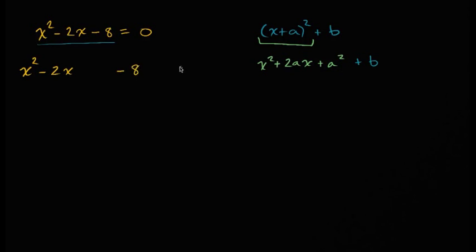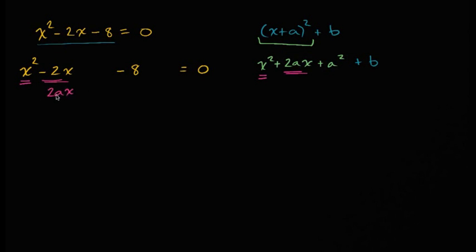Now, I think we are going to write 2x squared. Now, we are going to write 2x squared minus 2x squared. 2a is negative 2. Now, n equals minus 1.